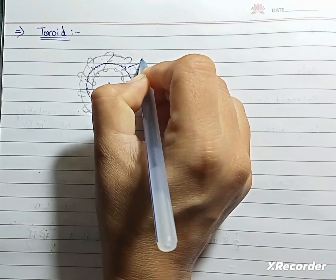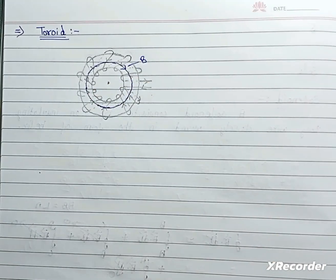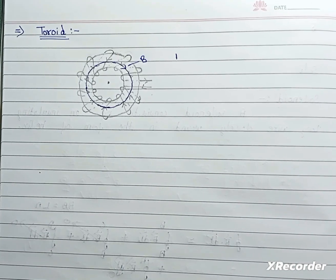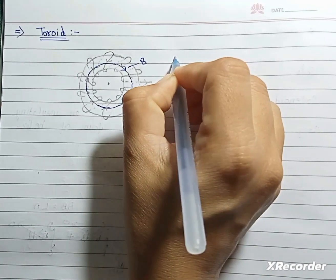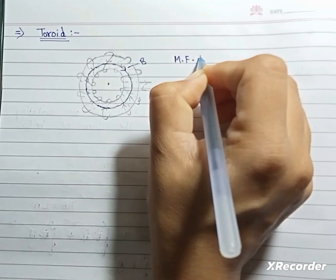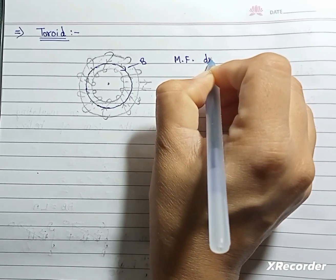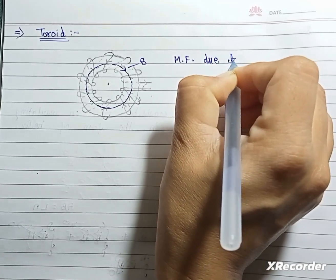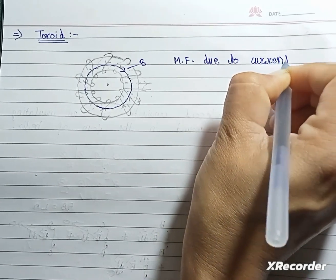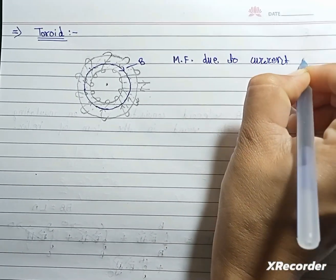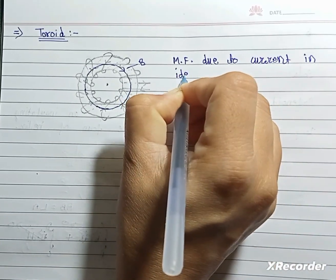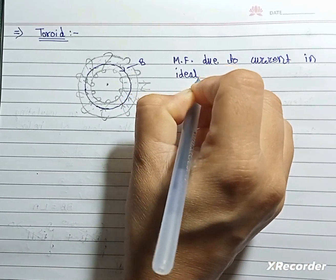Now we will calculate the magnetic field due to current in an ideal toroid.